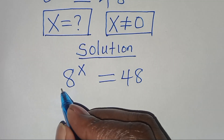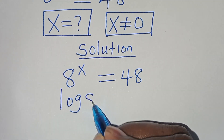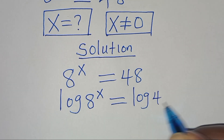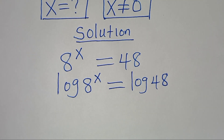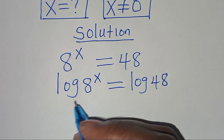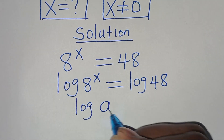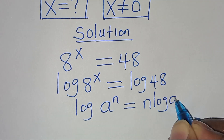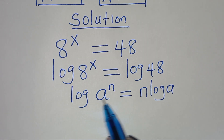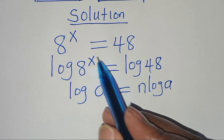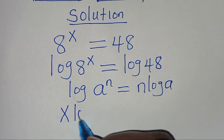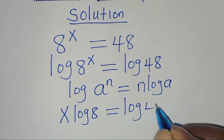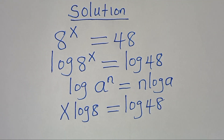To solve for x, we introduce logarithm on both sides, so we have log(8^x) equals log(48). We note that log(8^x) is in the form log(a^n), which can be expressed as n·log(a). Applying this power property of logarithm, log(8^x) becomes x·log(8), which equals log(48).